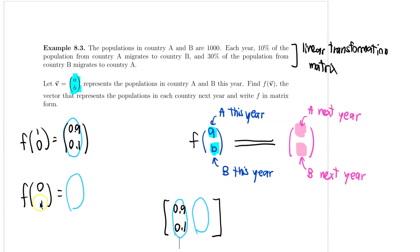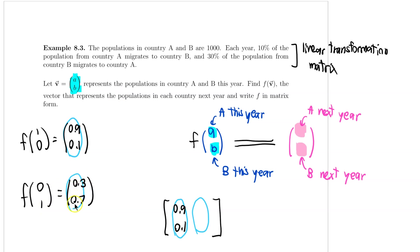And F of (0, 1) means I only have one person living in country B. Because 30% of people will migrate to country A, 0.3 people will move to country A next year, and 0.7 will remain in country B. So my second column is 0.3 and 0.7.